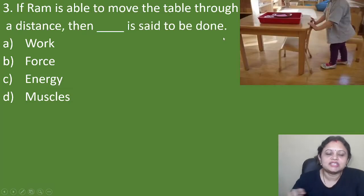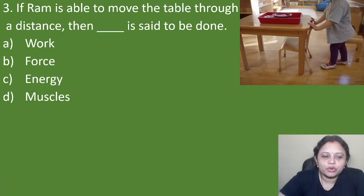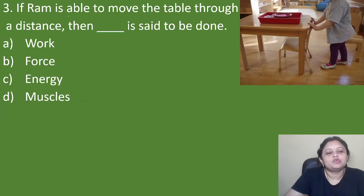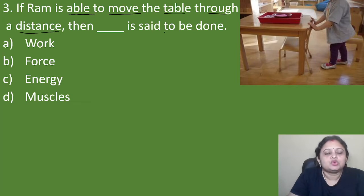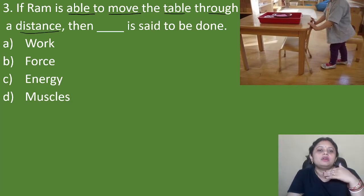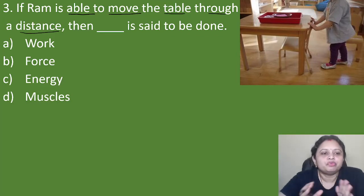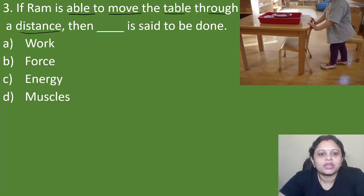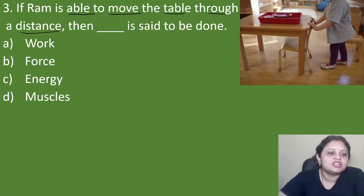Next question: if Ram is able to move the table through a distance, then dash is said to be done. Option A: work, B: force, C: energy, D: muscles. When we are able to move a body through a distance, we can say that work is done. So the correct answer is option A, that is work.